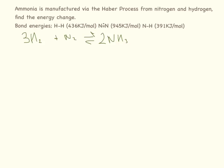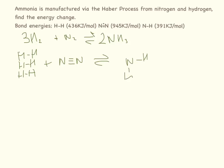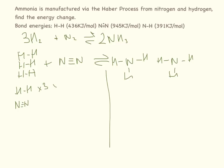Draw everything out: three H₂ molecules on the reactant side, one N₂ molecule with a triple bond, and two NH₃ molecules on the product side. Draw a line down the middle and list the bonds. On the reactant side we have three H-H bonds and one N≡N triple bond. The H-H bond energy is 436 kJ/mol: 3 × 436 = 1,308.